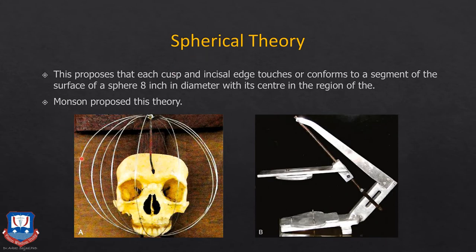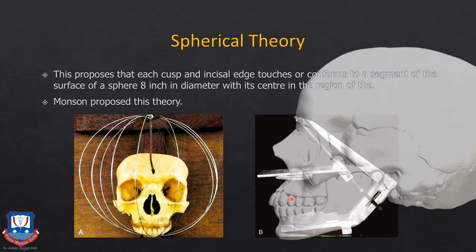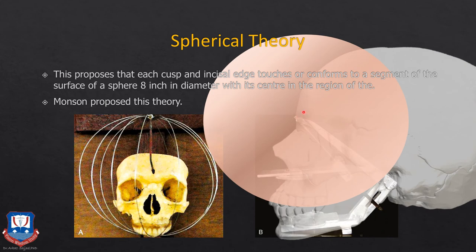The spherical theory was given by Monson. This theory suggests that each cusp and incisal edge of all the upper teeth — the maxilla — conform to a segment of a sphere which is 8 inches in diameter with its center over the glabella. He also made an articulator known as Monson's articulator. In this articulator, the spherical theory says that the upper occlusal and incisal surfaces of the maxillary teeth should conform to a segment of a sphere 8 inches in diameter with its center at the glabella — so the occlusal plane is oriented to the surface of such a sphere.